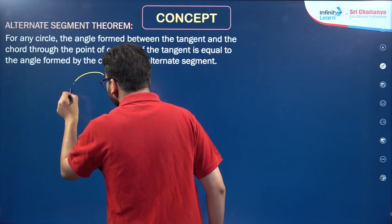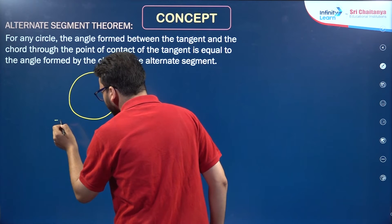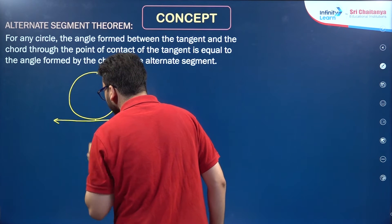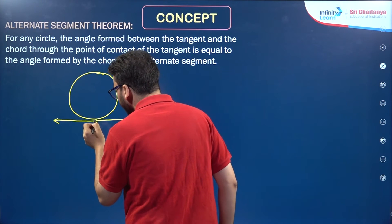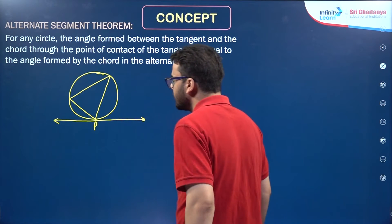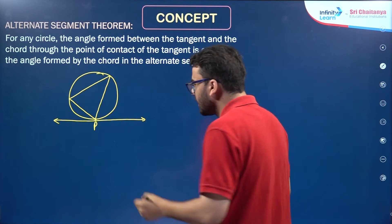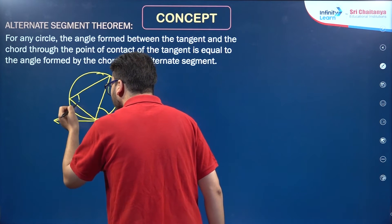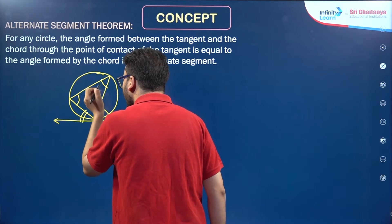If I have a circle and there is a tangent to this circle at a point — suppose this point is P — and suppose I'm making a triangle like this, then as per the alternate segment theorem, this angle will be equal to this angle, and this angle will be equal to this angle.